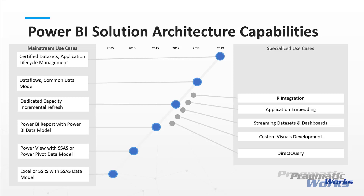In 2017, we saw the introduction of R, and likewise Python integration was added in 2018. Now we have both R and Python, which allows us to perform true data science and, to some degree, machine learning and AI integrated into Power BI in a number of different ways.